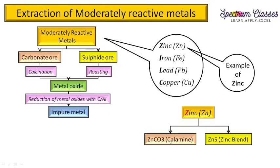Calcination means heating the ore below the melting point of zinc in the absence of air. For zinc sulfide, since oxygen is not present in the ore, we heat it below its melting point in the presence of air — that is roasting. In both cases we get the metal oxide, which for moderately reactive metals is then reduced by either carbon or aluminium to give impure metal, which is then purified.